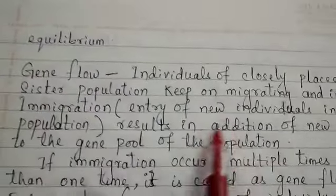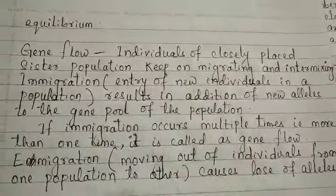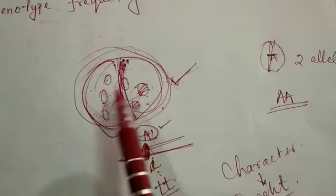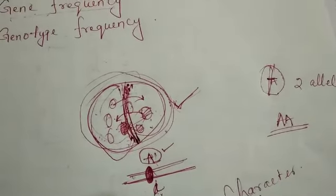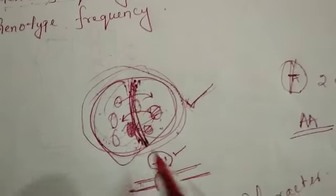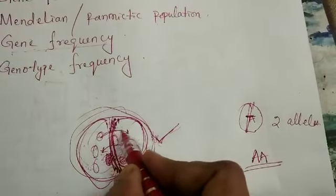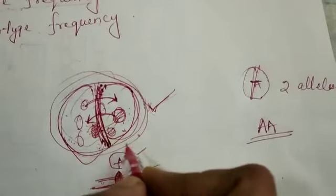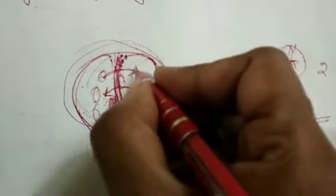Gene flow occurs when individuals of closely placed sister populations keep on migrating and intermixing with each other. Individuals from one population can migrate to the other. If new organisms move into a population, that is called immigration. If organisms leave the population, that is called emigration.